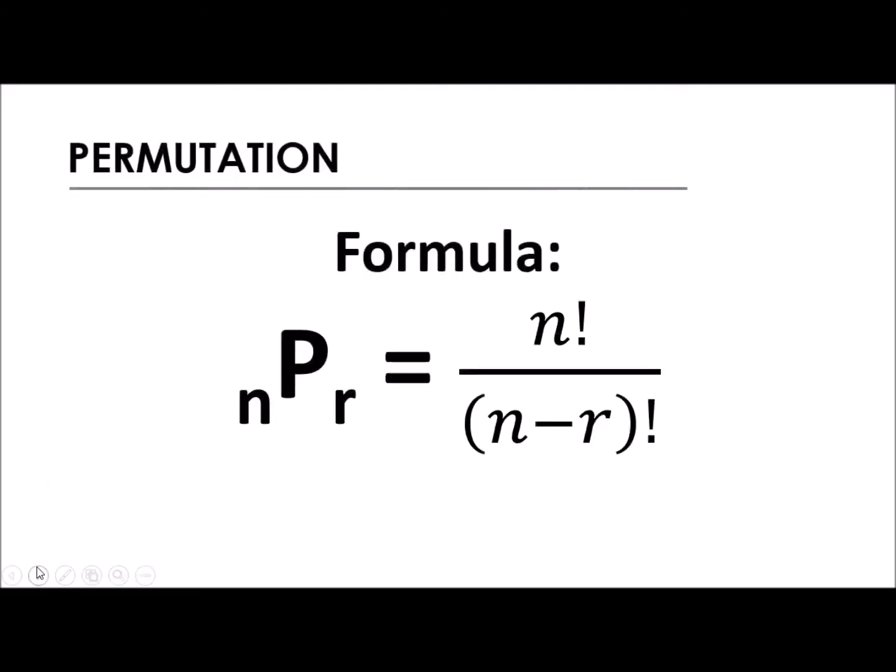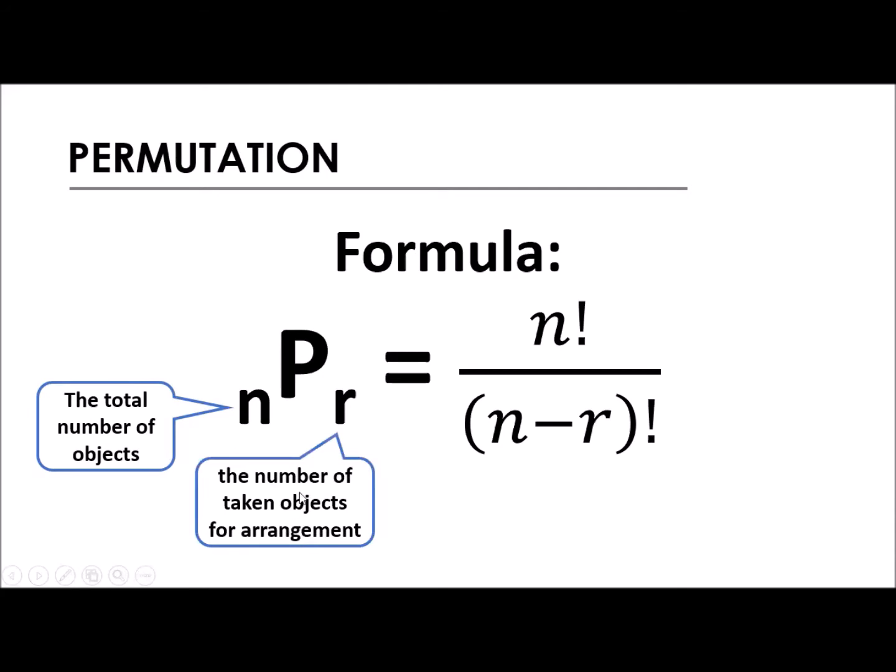So let's have the formula. Permutation of n taken by r is equal to n factorial over the quantity n minus r factorial. And take note of the symbols: n pertains to the total number of objects to be arranged, and r means taken - whatever is needed, whatever fits in the space provided, or whoever is included in the arrangement. Please take note of these symbols, the parentheses and the factorial notation.